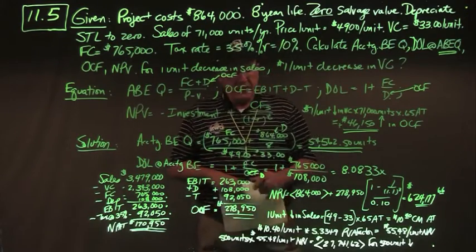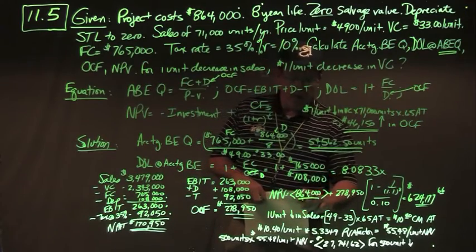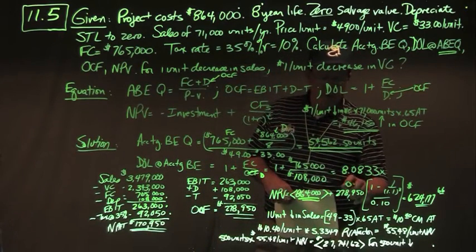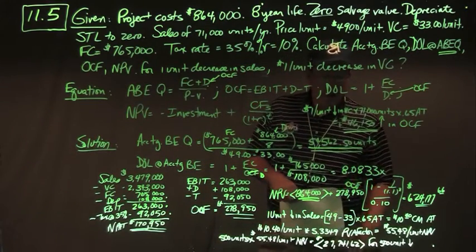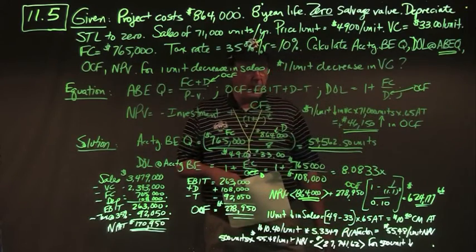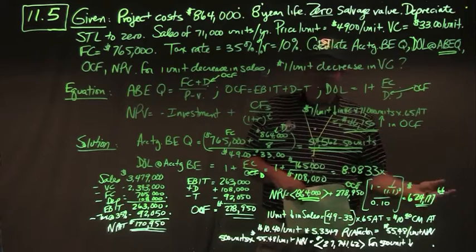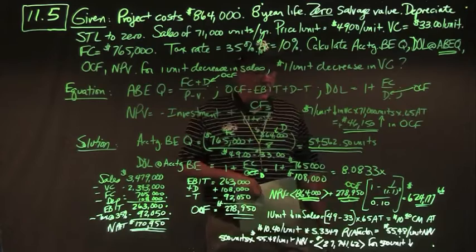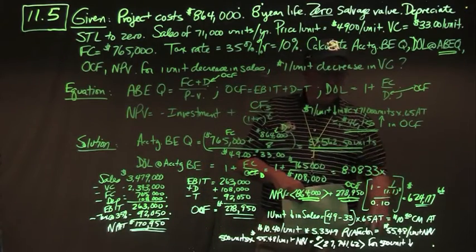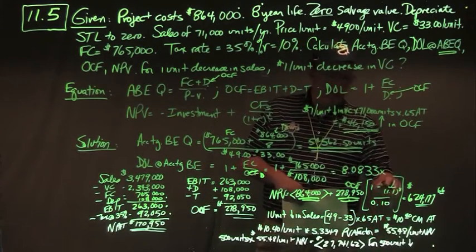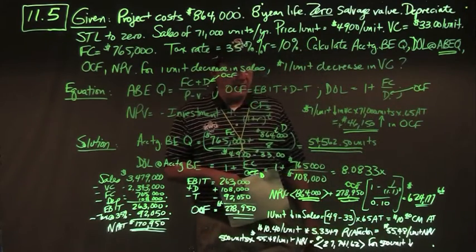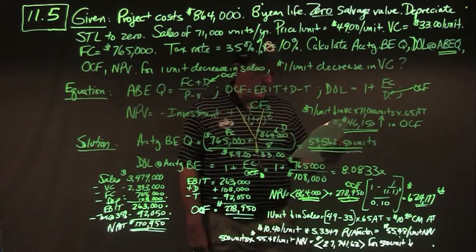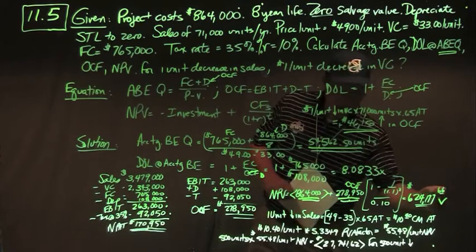NPV is minus the cash outflow of $864,000 plus the present value of $278,950 annual OCF discounted at 10% over 8 years — treating it as an annuity: C times (1 minus 1 over (1 plus R) to the T) over R. This gives a base case NPV of $624,177.66.